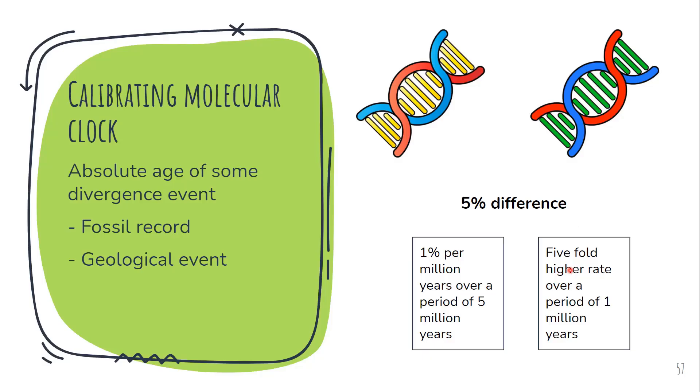So now how do I come to know about this? So the time of particular divergence event can be known mainly by two ways. One, having a fossil record.